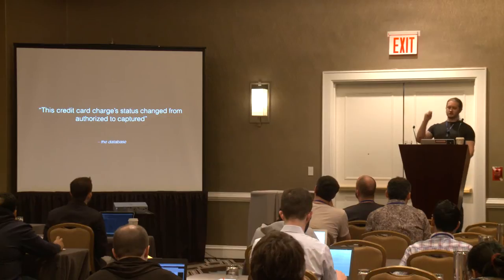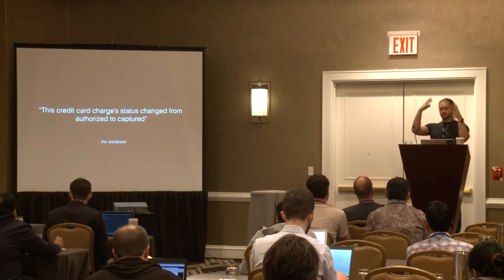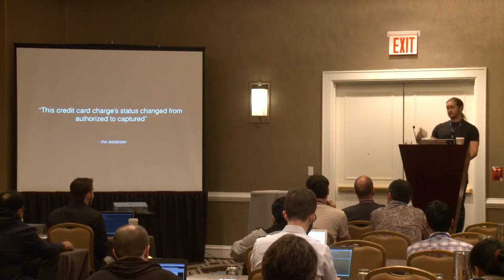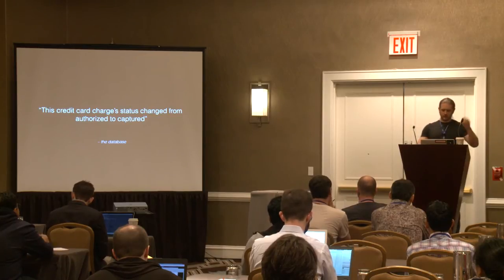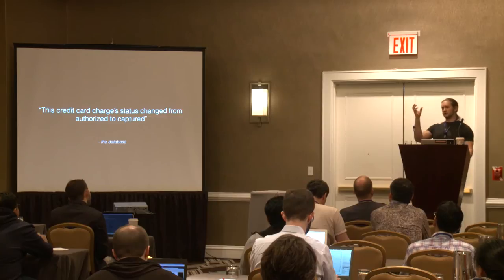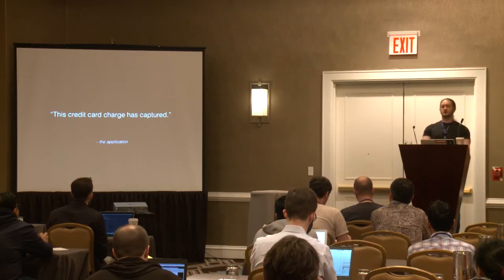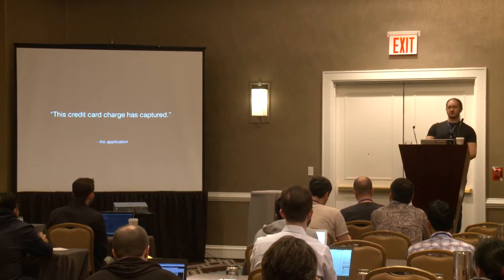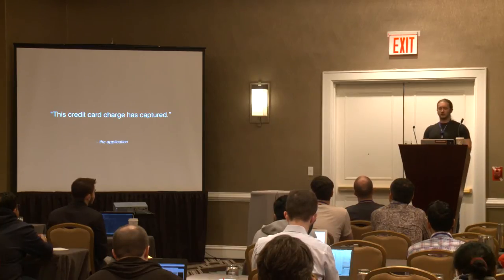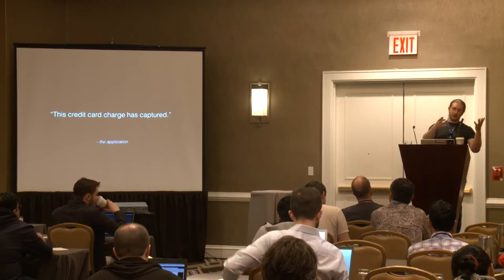The database might say: this credit card charge's status has changed from authorized to captured. That's a statement of some state changing. We could take this change and apply it to another system, log the change, or react to the state change. Compare that to an event stream message, which is much more direct — your application tells you this credit card charge has captured. That's a declaration of a specific domain event, whereas the database event is an observation of a state change that you react to.